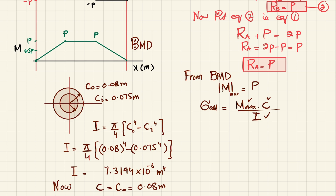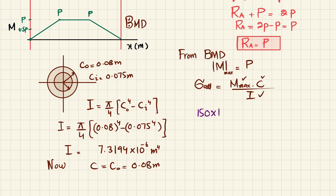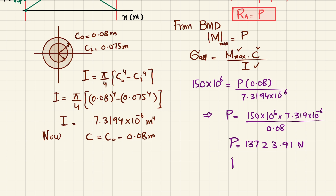We apply the bending stress formula: allowable bending stress is 150 MPa. So 150 times 10^6 equals P times 0.08 divided by 7.3194 times 10^-6. Solving for P: P equals 150 times 10^6 times 7.3194 times 10^-6 divided by 0.08, which gives P equals 13,723.91 N, or approximately 13.7 kN.